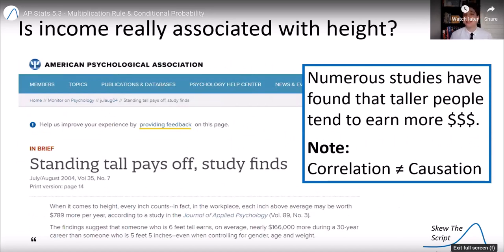And this is actually found in general studies as well. Numerous studies have found that taller people tend to earn more money. In other words, these variables are not independent. Now note, correlation is not equal causation. It's not necessarily saying that height causes people to earn more. But there is a correlation there, and these variables are not independent. Knowing someone's height can give you some information and affect the probability of them earning a certain amount of income.